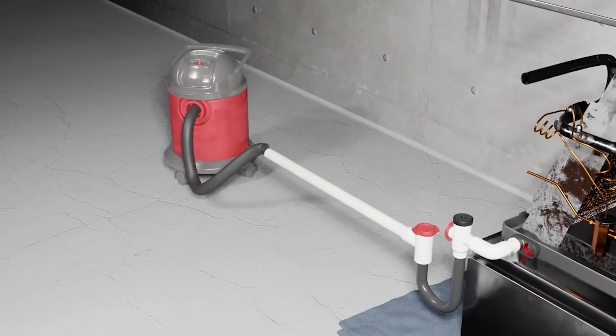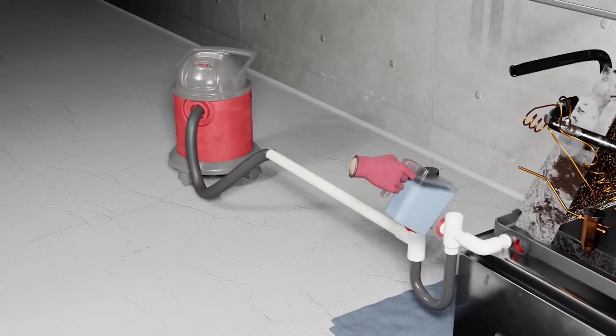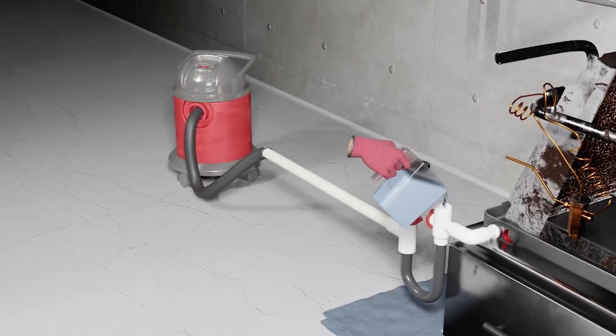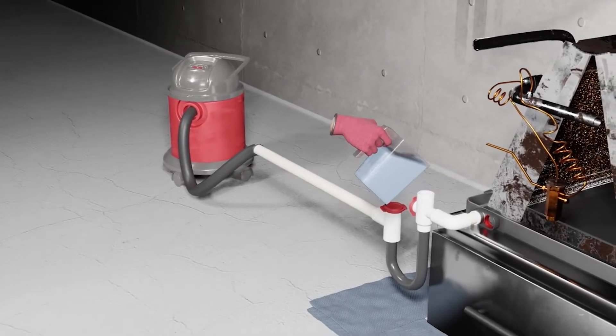We also suggest cleaning the drain line first and leaving a wet-dry vacuum connected during cleaning to remove the cleaner and suds that are rinsing off the coil.